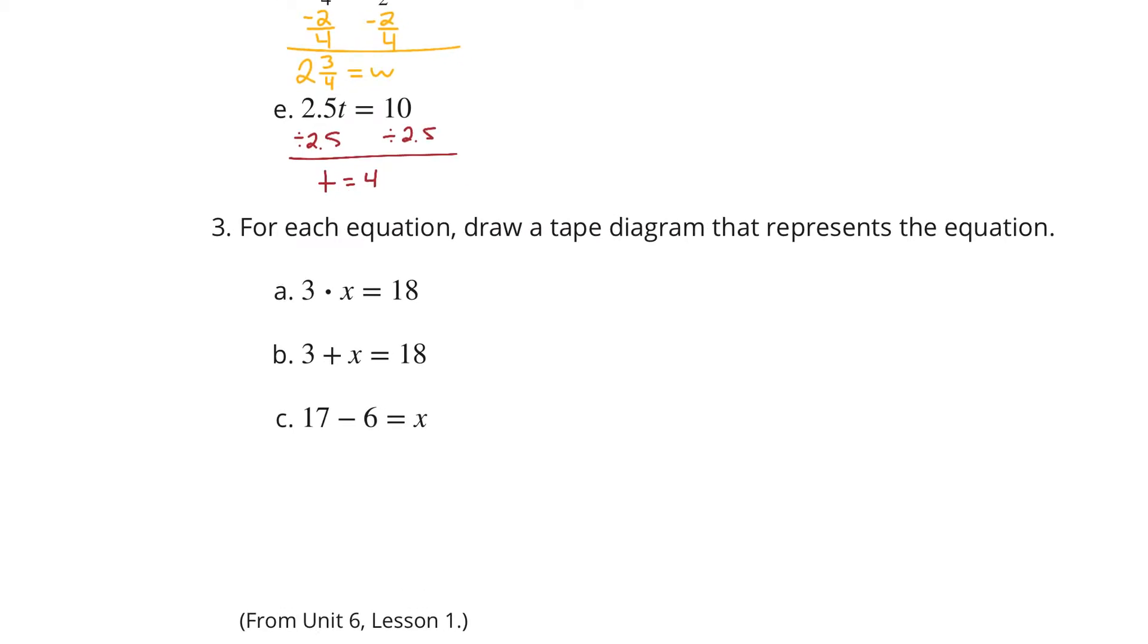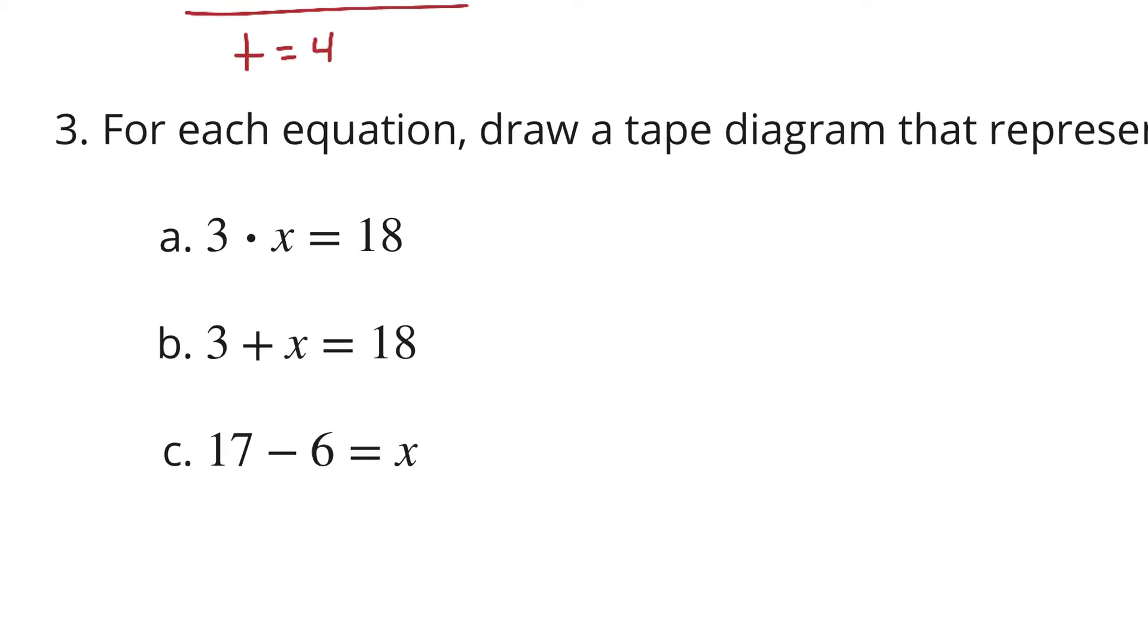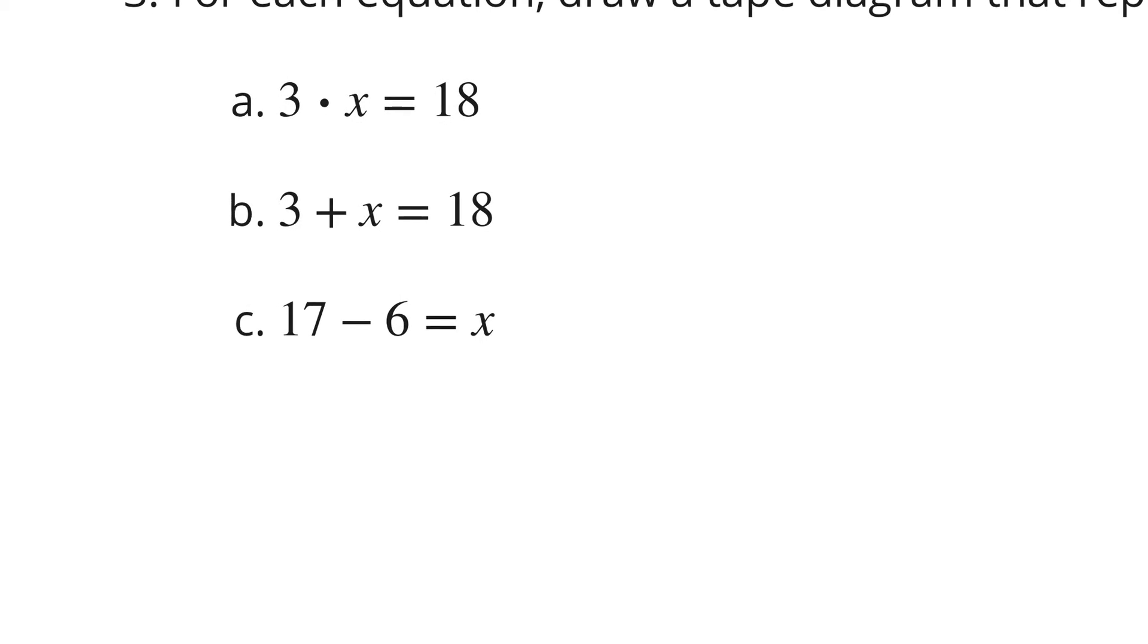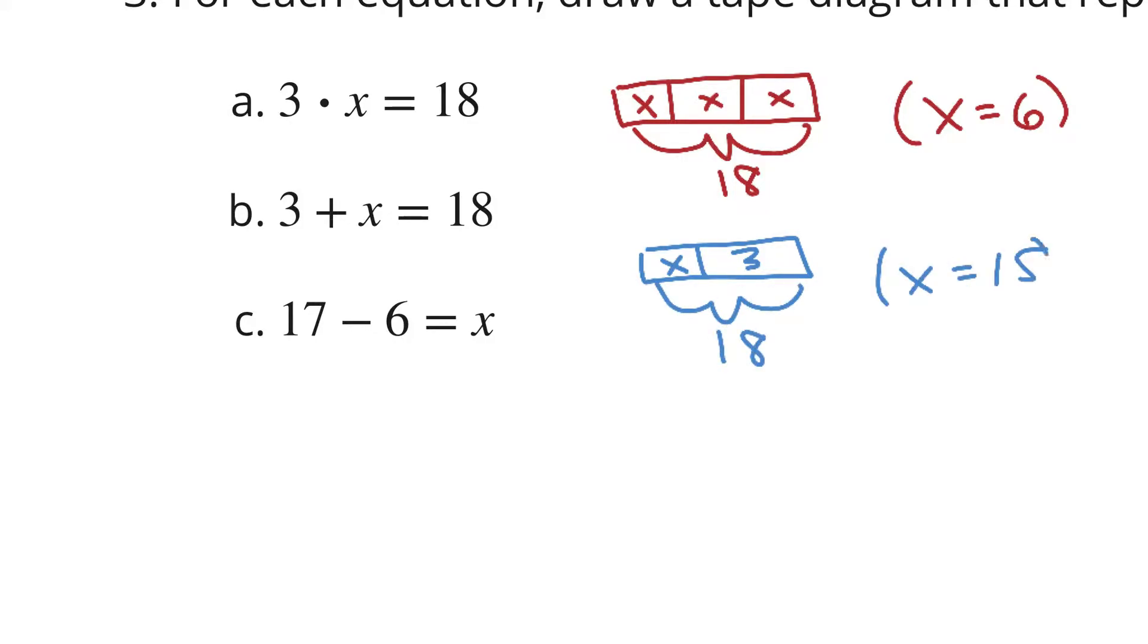For each equation, draw a tape diagram that represents the situation. 3 times X equals 18. I take my tape and divide it into 3 equal parts of X. That's going to equal 18. By the way, X equals 6 there. Next, 3 plus X equals 18. I take my tape diagram, divide it into an X and a 3. That's going to equal 18. By the way, X equals 15 there.